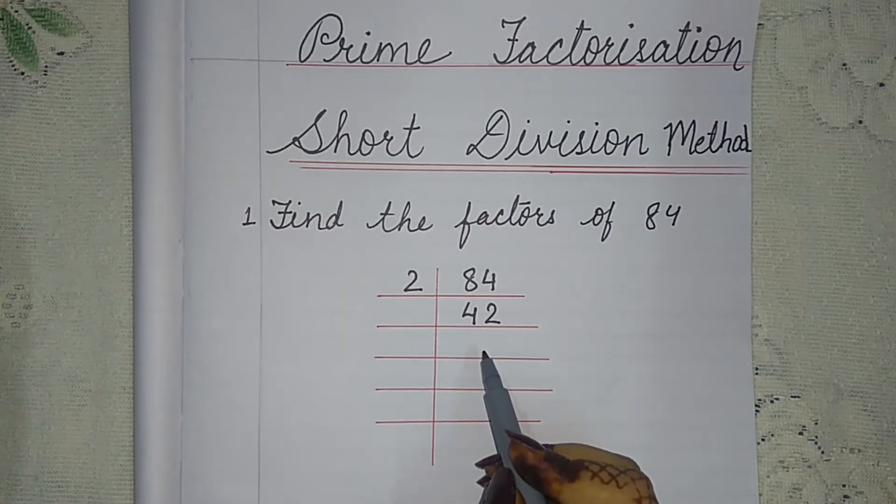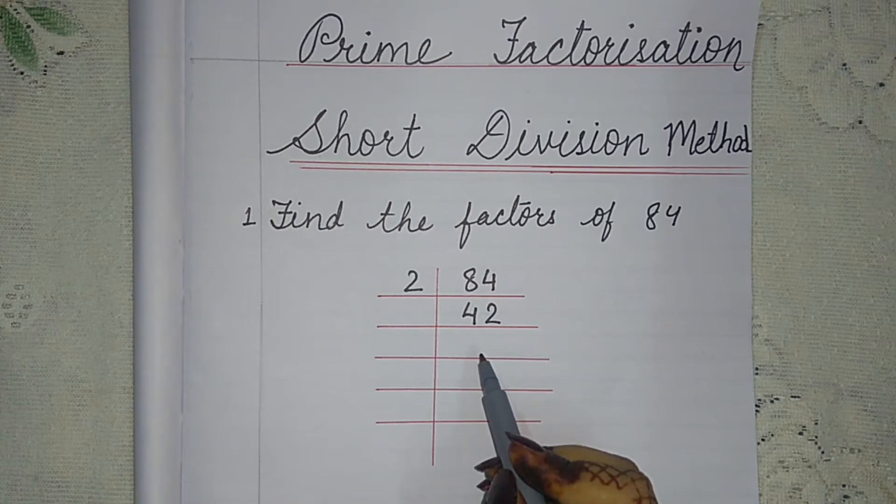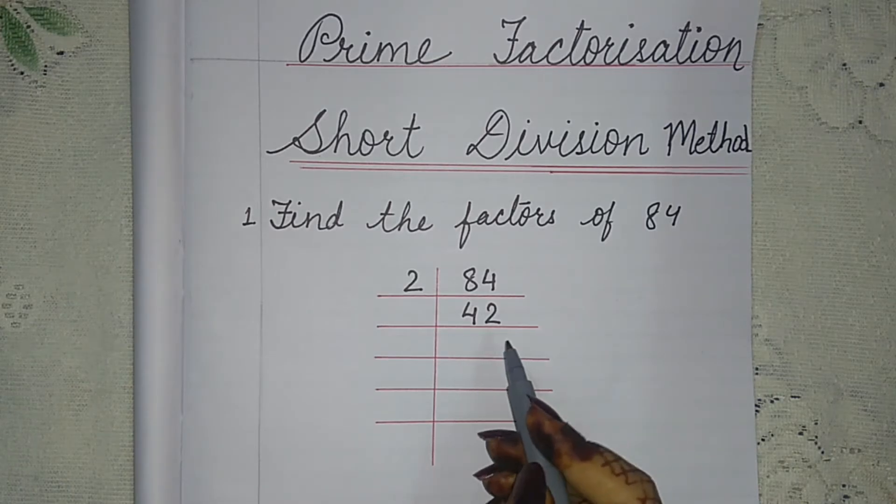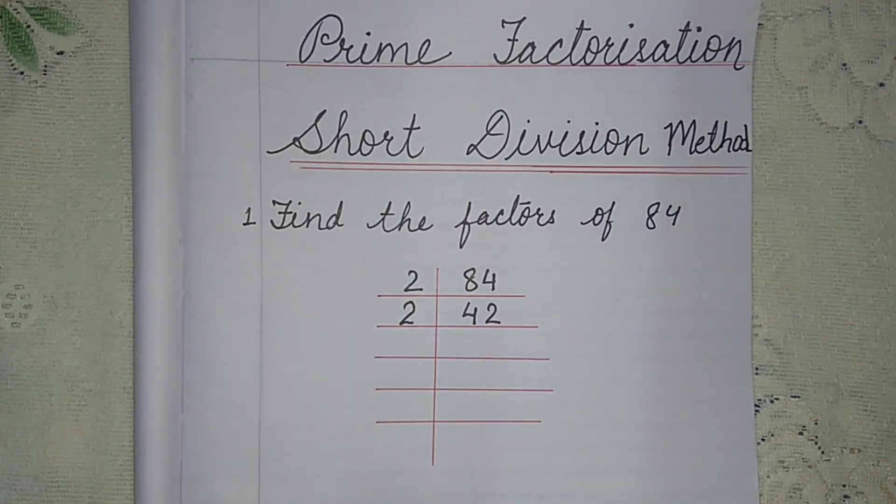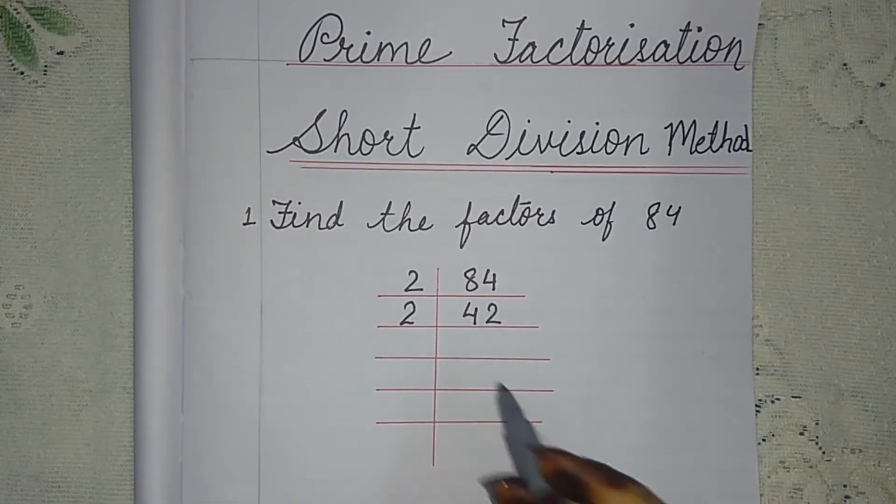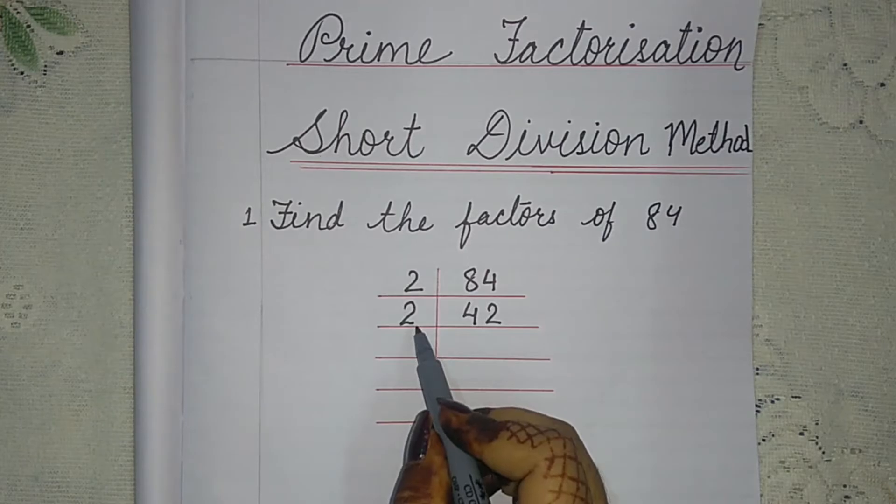Now 42 is also an even number. It is also an even number, it means it will also be divided by 2. So we will divide it by 2 next.